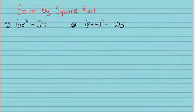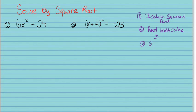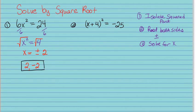Now we're solving by square roots. The steps are: isolate the squared part, root both sides — remembering both positive and negative — then solve for the variable. For the first one, divide both sides by 6 to get x squared equals 4. Taking the square root of both sides gives x equals positive and negative 2, so my two answers are 2 and negative 2.